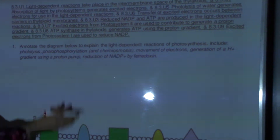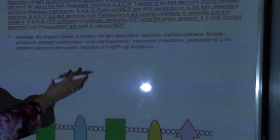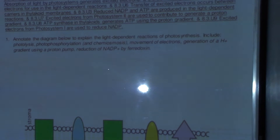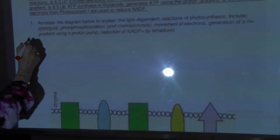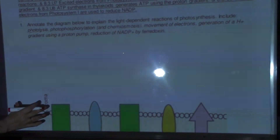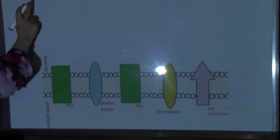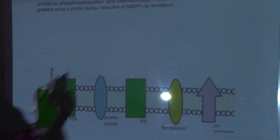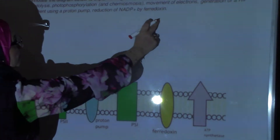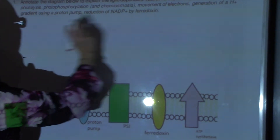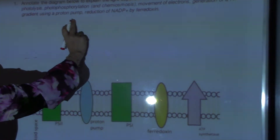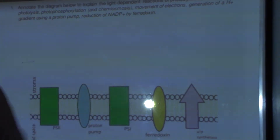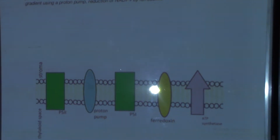Question 1: Annotate the diagram below to explain light-dependent reactions of photosynthesis. Include photolysis, photophosphorylation and chemiosmosis, movement of electrons, generation of proton gradient using a proton pump, and reduction of NADP+ by ferredoxin.